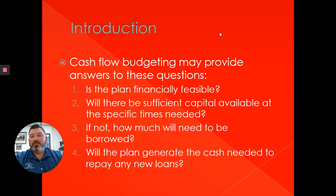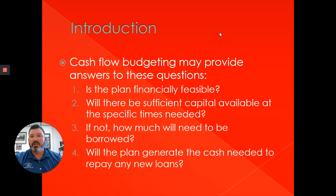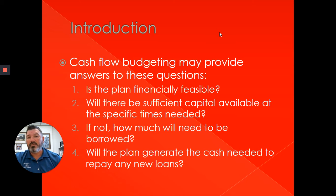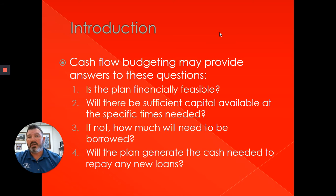A cash flow budget is going to provide answers to key questions. Similar to the enterprise budget we talked about in a prior unit and the partial budget from Unit 6, we can take that information and filter it into our cash flow budget to decide: is a plan financially feasible? Can we do what we said we were going to do in an enterprise budget? If we're projecting differences in a partial budget, how does that flow in and is the plan actually going to work?